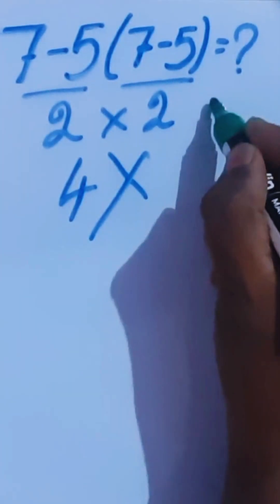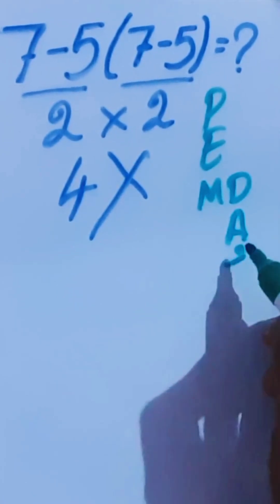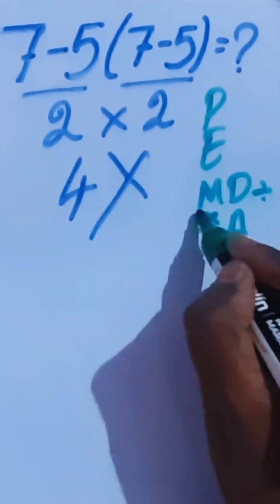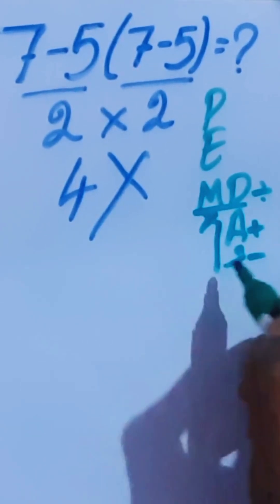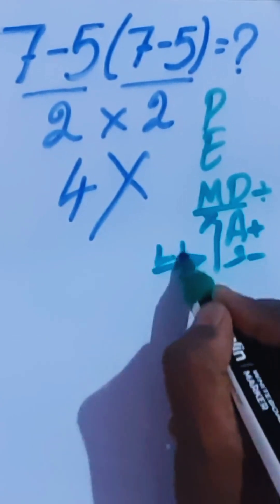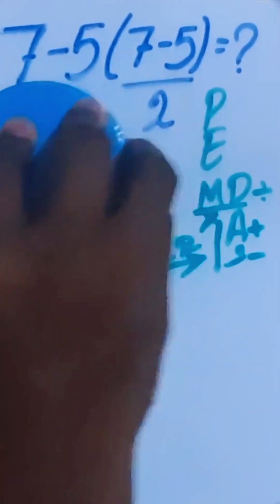Here, multiplication and division are equal priority. Also, addition and subtraction are equal priority. For this, we have to follow the left to right rule in the problem. Now we are going to solve this problem using the order of operations.